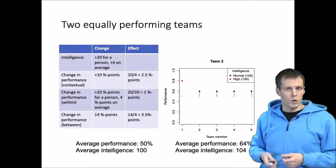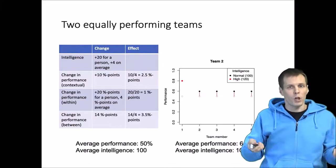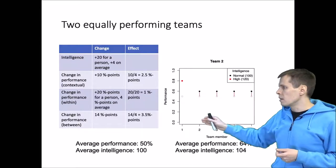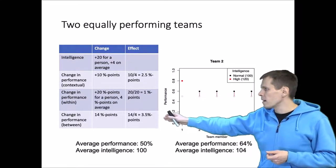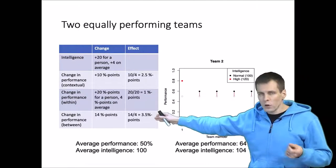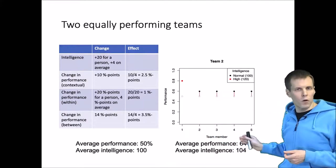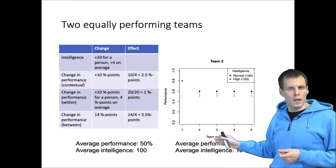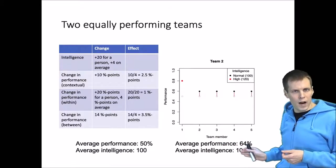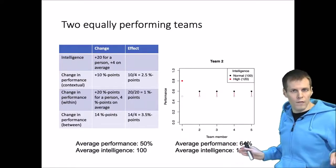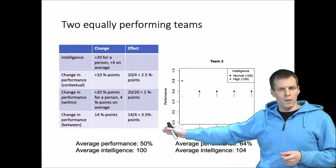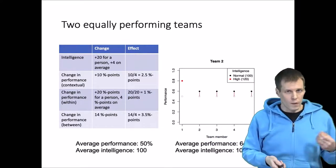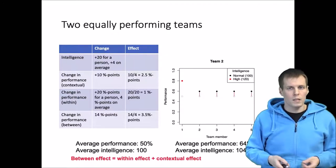So we got one percentage point difference per point of intelligence. If we take a look at the change in performance for the between effect, the change was 14 percentage points — 64% compared to 50% — and the change in the explanatory variable, intelligence, was 4 points on average. So 14 divided by 4 is 3.5%, which is the sum of the within and contextual effect. That's the between effect.